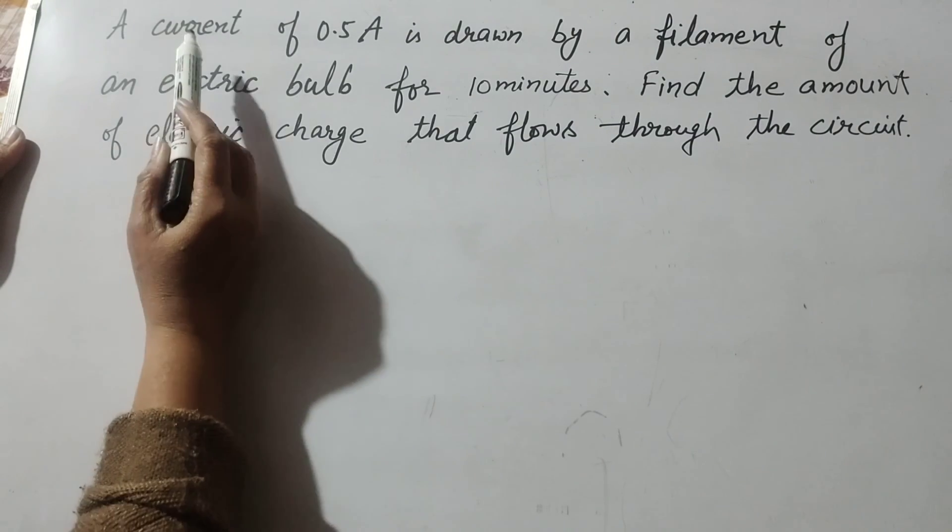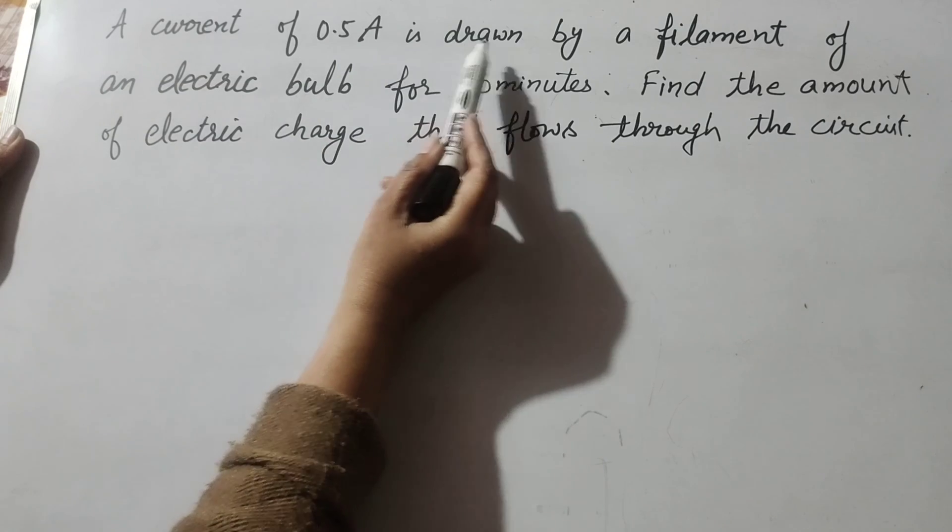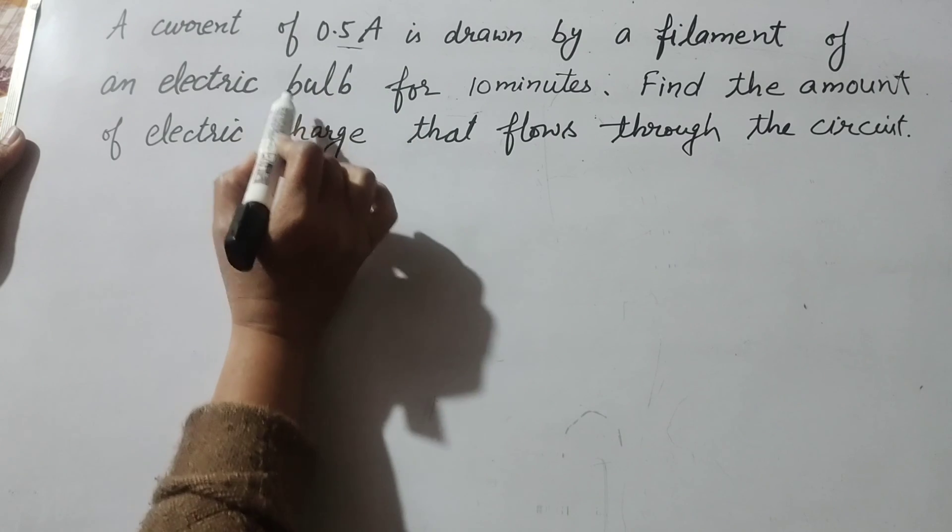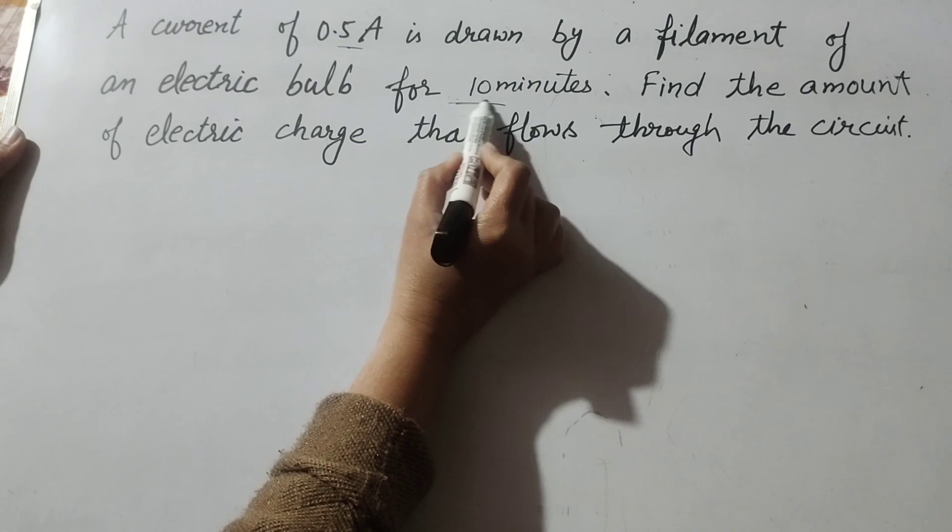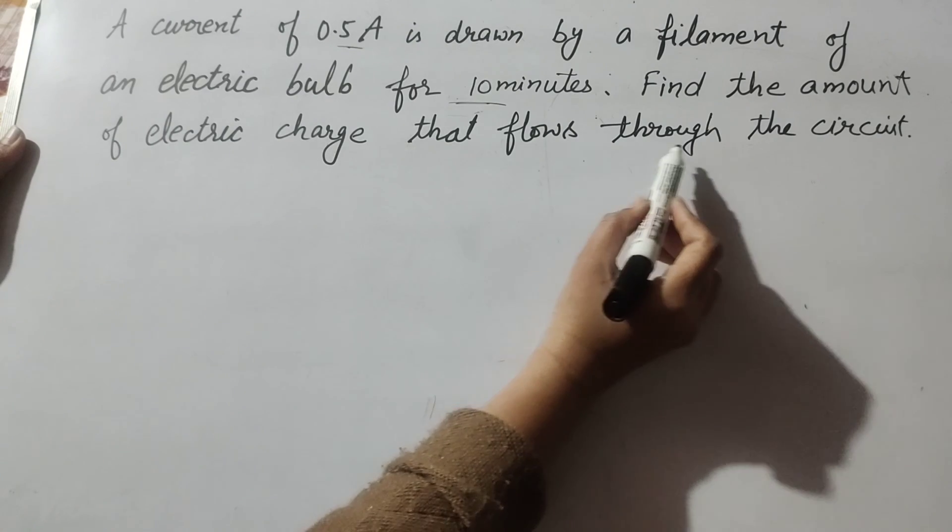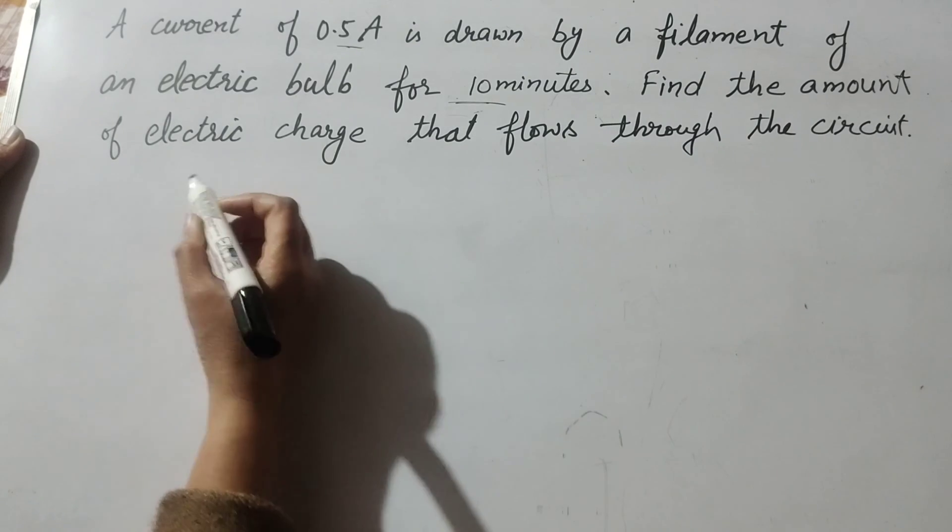So in this question is given a current of 0.5 ampere drawn by a filament. Current is passing 0.5 ampere. Time is given 10 minutes and we find the amount of electric charge that flows through the circuit. So we find Q.